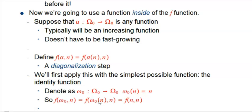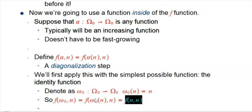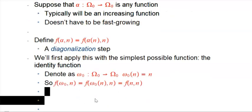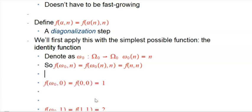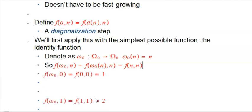The omega-naught f function applied to n — by the rule we had — is: take omega-naught and let it eat n to produce a number. All that does is produce n. And then you take f of n comma n. That's where we get a diagonalization. Let me give you a few examples, and then I'll show you a picture of why we can think of that as a diagonal in a grid.